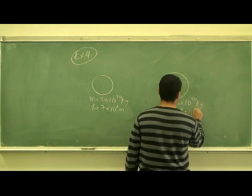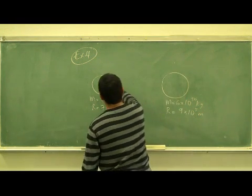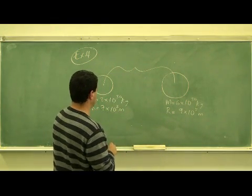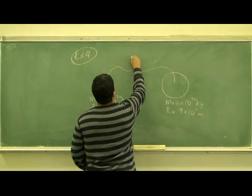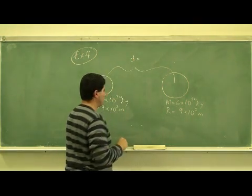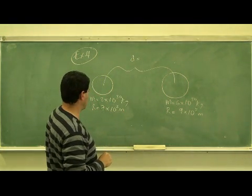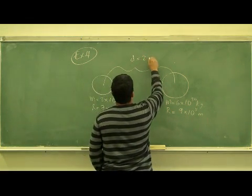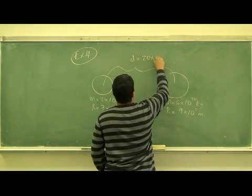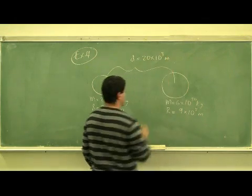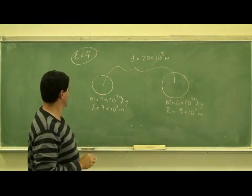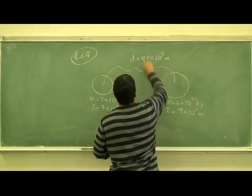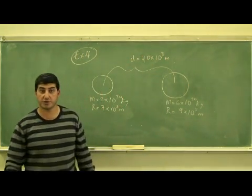Let's say the distance between them is pretty close, so we can make the distance between them something like 20 times 10 to the 8 meters. That's pretty close, let me make it bigger, let's say something like 40 times 10 to the 8 meters.